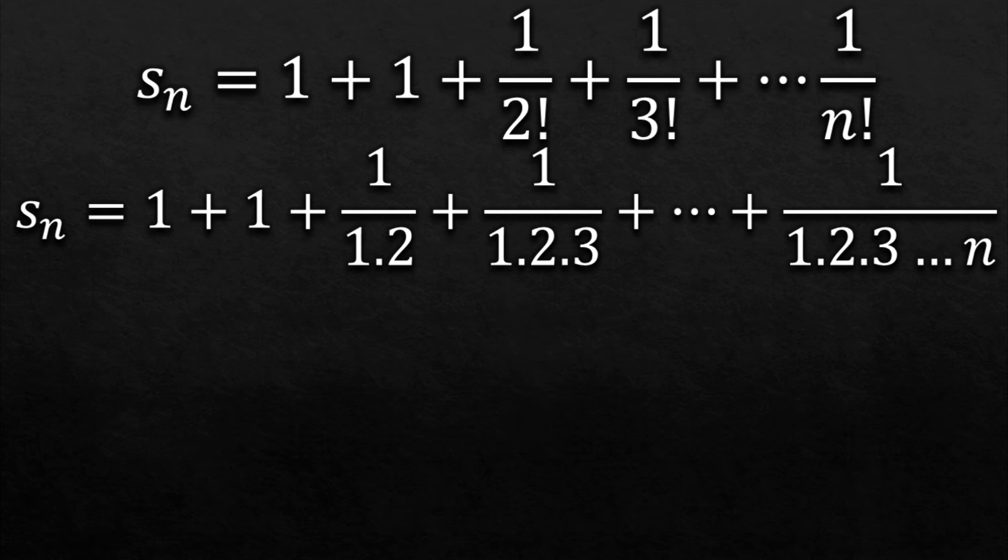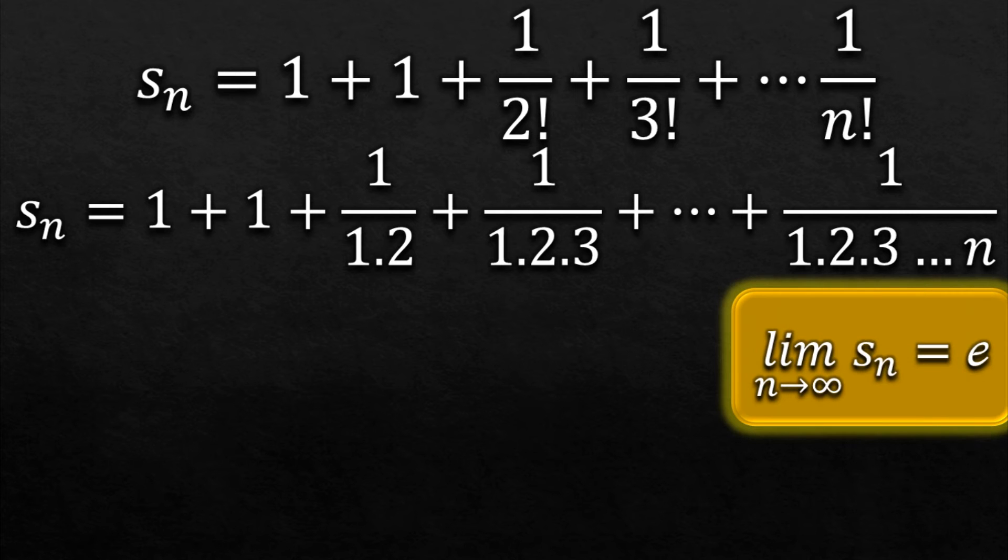Now one thing that we need to keep in mind that's very important for later use is: for limit n approaches infinity, Sn gets equal to Euler number. It is so important that I keep it in a golden bar. You will see why in a minute.